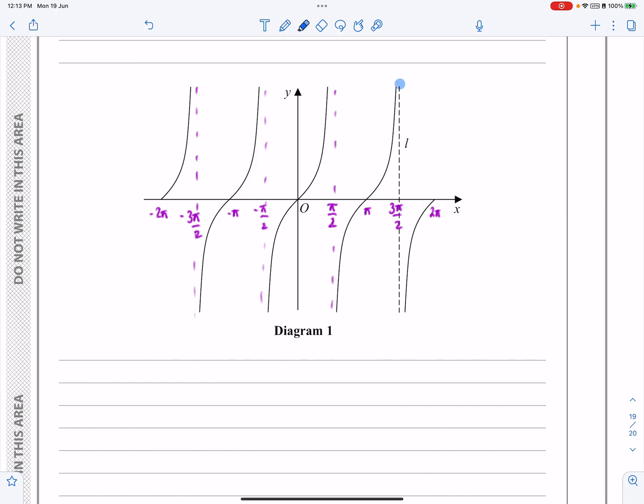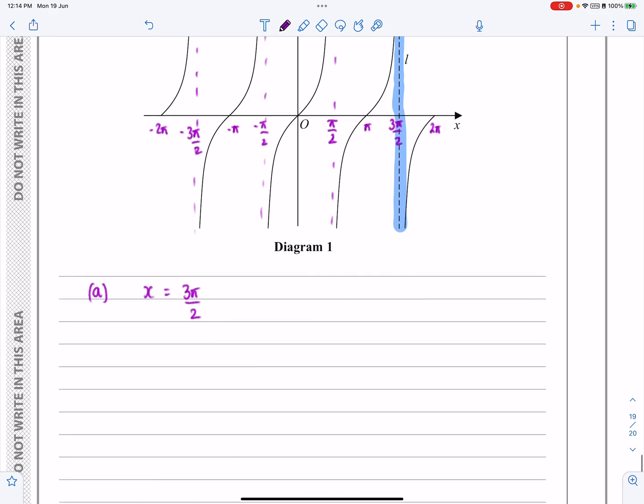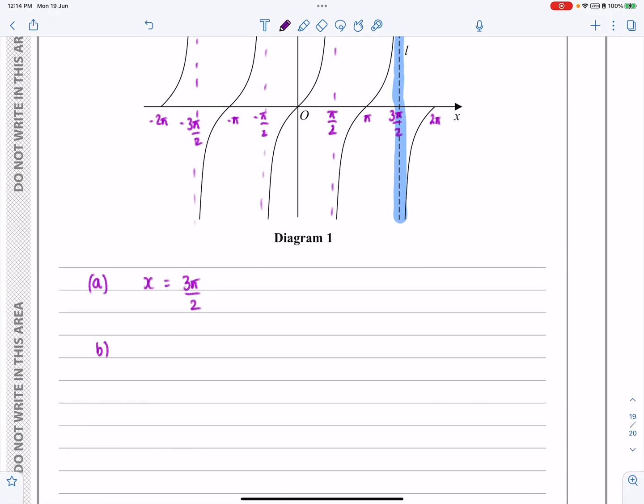What was helpful was that the first question says, what's the equation of that line there? So part A, the answer for the equation, and it's only worth one mark so we can just write it straight in, is x equals 3π over 2. And we know that simply from our knowledge of what the tan graph actually looks like.